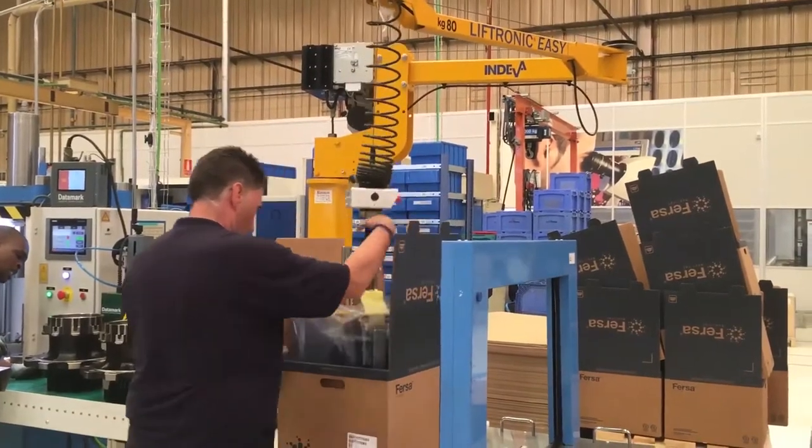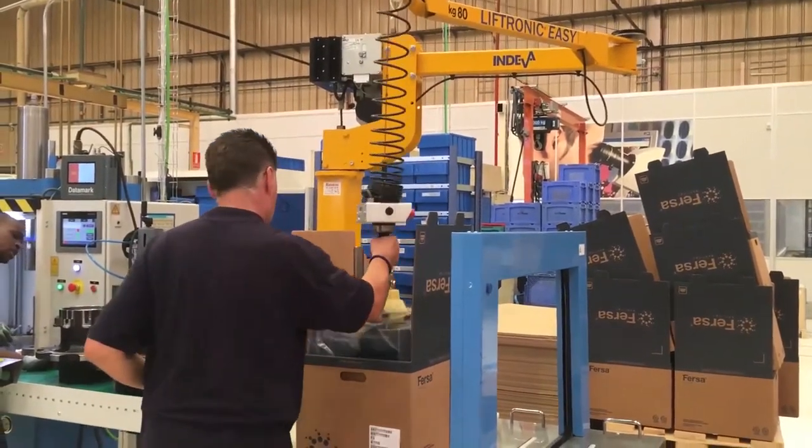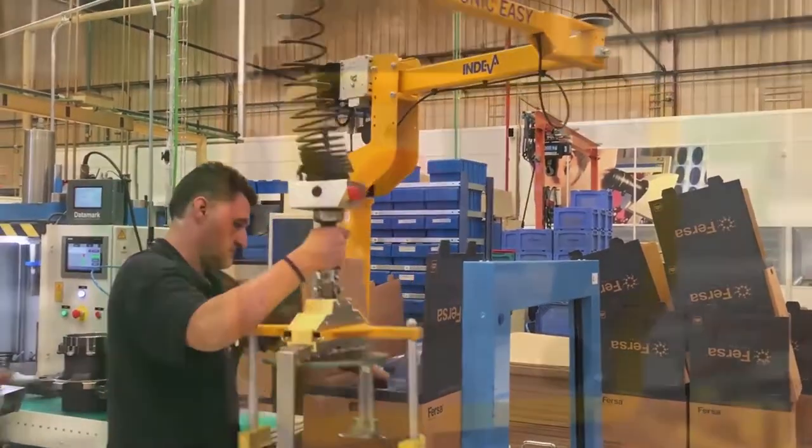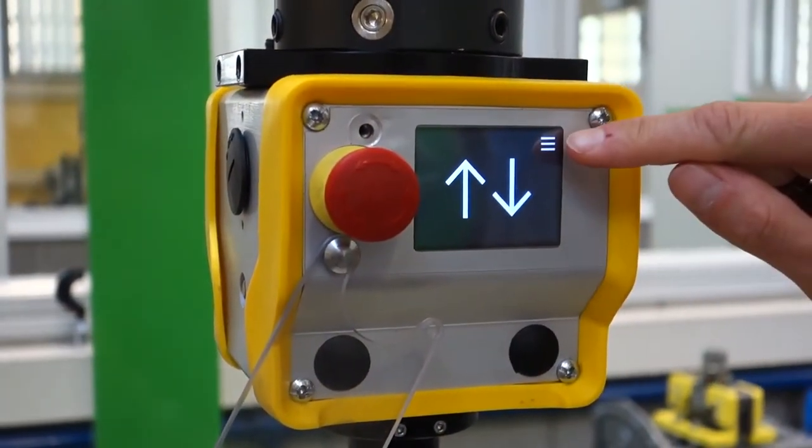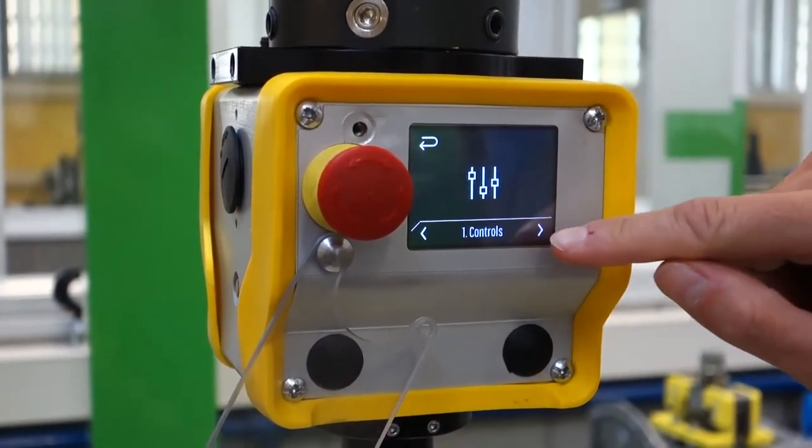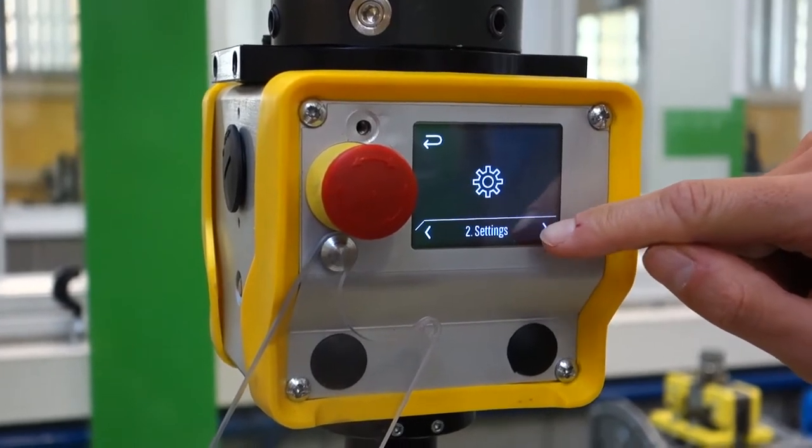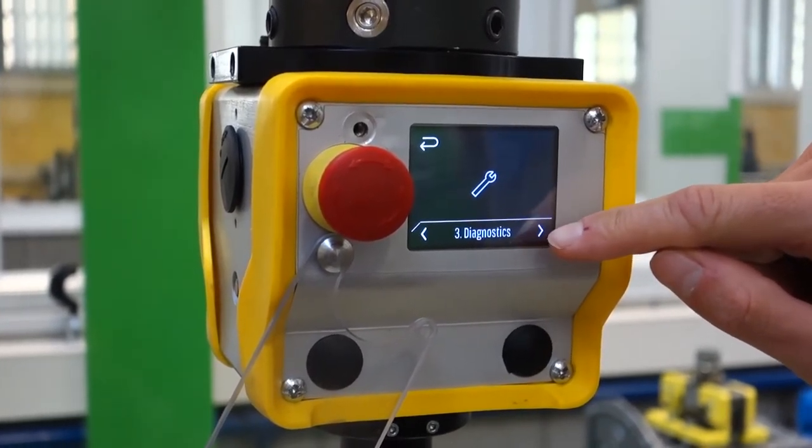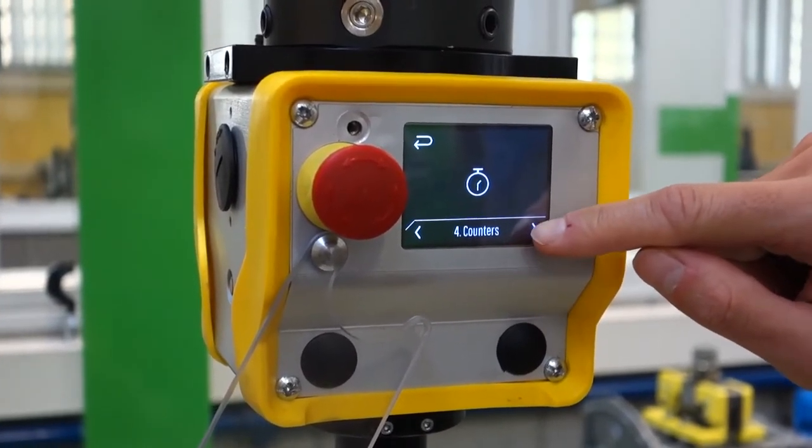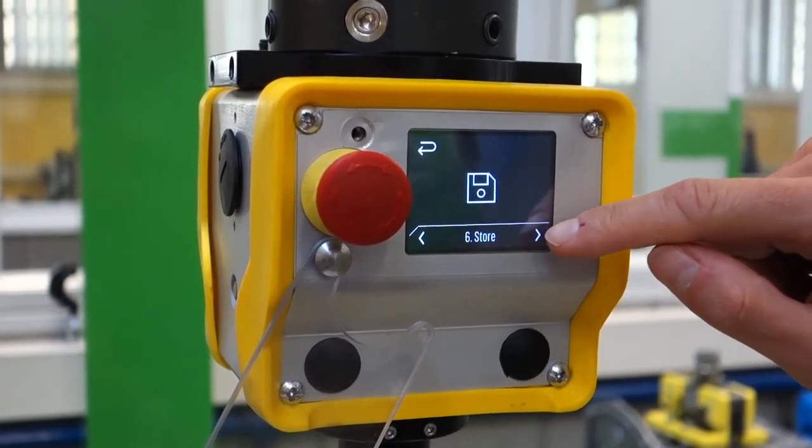A liftronic fits perfectly into an Industry 4.0 organization, as the onboard electronics are already set up to interface with the customer's management system via a simple gateway. Moreover, we can also remotely change the manipulator settings according to the type of work to be carried out.